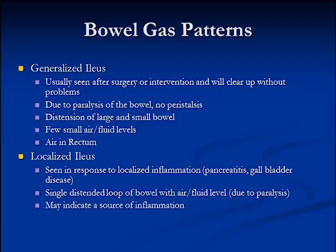A localized ileus is again a paralysis of the bowel, but it's usually seen in response to a localized inflammatory process such as pancreatitis or gallbladder disease. The bowel immediately adjacent to the inflamed organ dilates and becomes distended, containing a near fluid level. When we see that, it can help indicate where the inflammation is occurring.